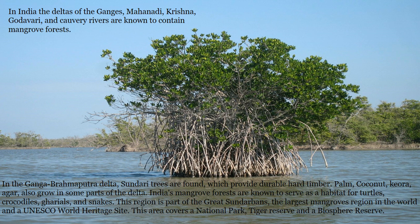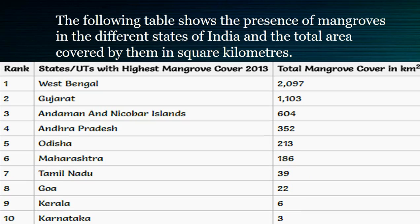This region is part of the Great Sundarbans, the largest mangroves region in the world and a UNESCO World Heritage Site. This area covers the National Park, Tiger Reserve, and the Biosphere Reserve. The following table shows the presence of mangroves in the different states of India and the total area covered by them in square kilometers.